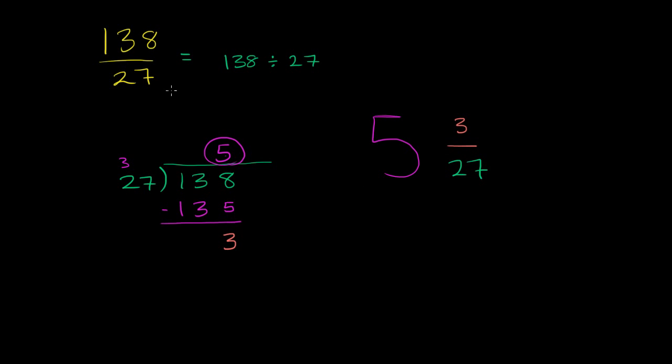5 and 3 27ths. Another way that you could rewrite this expression up here, instead of 138 over 27, you could rewrite it as 135 plus 3 over 27.